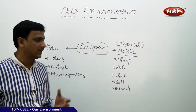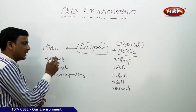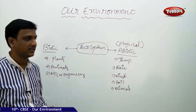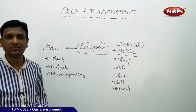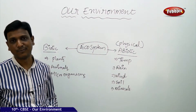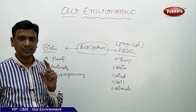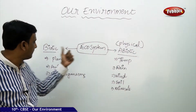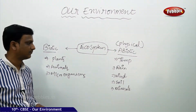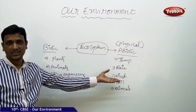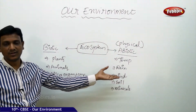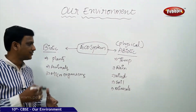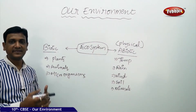For example, a plant needs energy to grow. That energy is supplied by the sun — temperature and sunlight, which is also a physical component. So this abiotic factor, sunlight, affects the growth of the plant. Rain is another physical component that influences the growth of plants. In this way, the biotic and abiotic components are interrelated and affect each other.